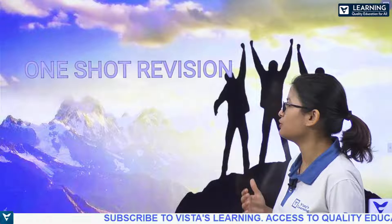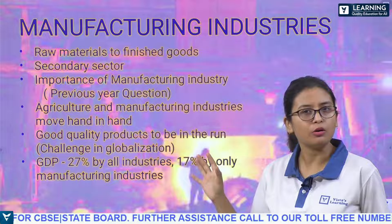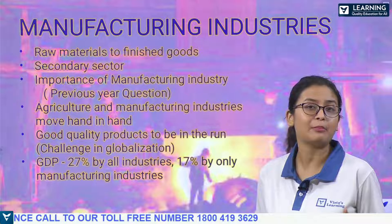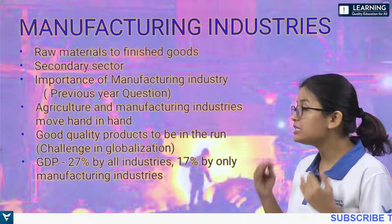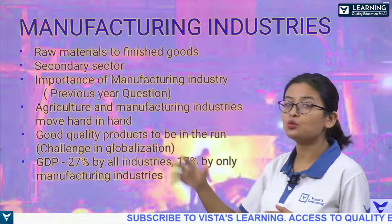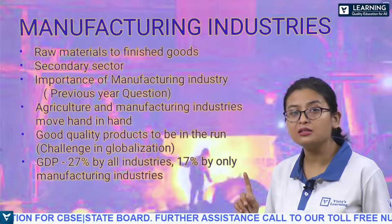Manufacturing industry — before we solve the question papers, let's get an idea what this chapter is about. Industries which deal with the production and converting of raw materials to finished goods are called manufacturing industries. Industries can come under primary sector, secondary sector, and tertiary sector.